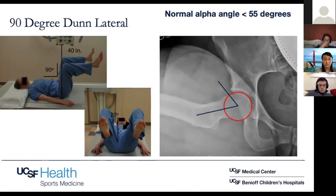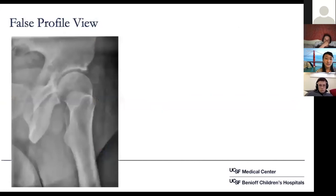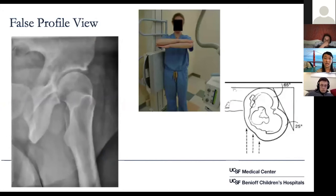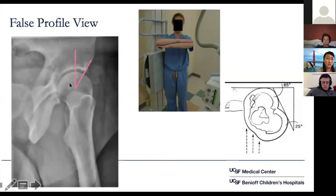The false profile view looks at the anterior coverage of the acetabulum. The patient stands about 60 degrees to the X-ray plate with the affected foot externally rotated. On this picture, you measure the anterior center edge angle — from the center of the femoral head, a line straight up, then a line out to the most anterior portion of the acetabulum. Normal anterior center edge angle is 25 to 40 degrees, same as the lateral center edge angle in terms of normal values.